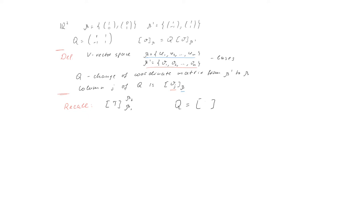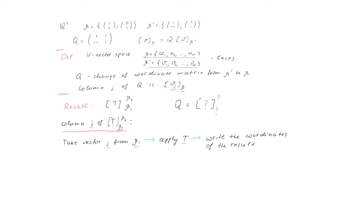We must be able to interpret Q as the matrix of some transformation from one basis to another. Let us recall how the columns of the matrix of a linear transformation appear. First, we take vector j from the basis beta1. Then we apply the transformation T to this vector. Then we write the coordinates of the result in the basis beta2. Now, when we look back at our Q, what will be beta1, what will be T, and what will be beta2? Think about it and then we will continue.